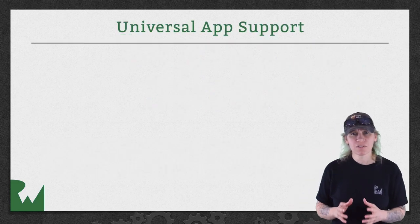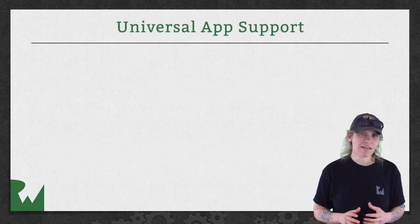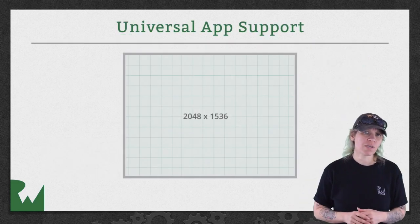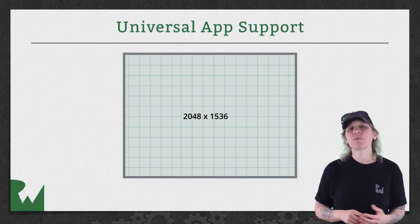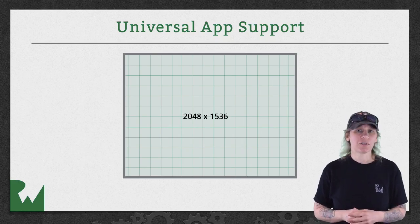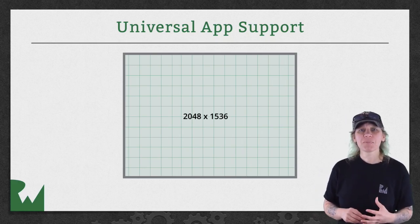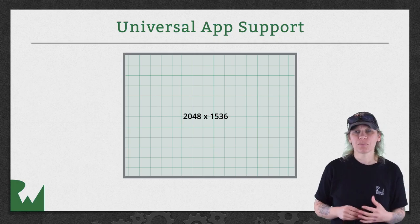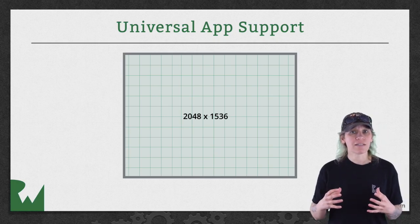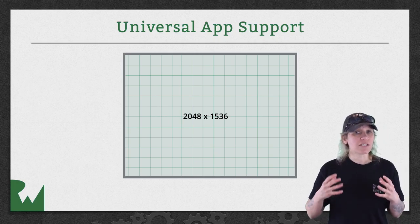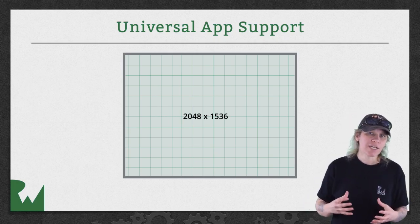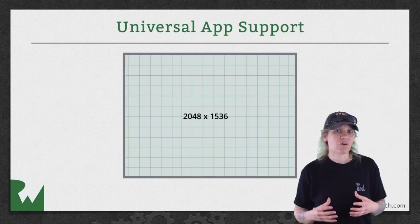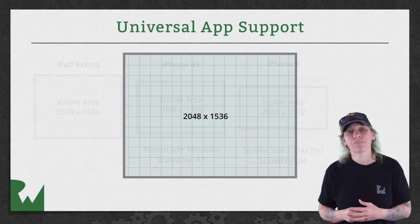Zombie Konga was designed with a base size of 2048 x 1536, with the scale mode set to Aspect Fill. Aspect Fill instructs Sprite Kit to scale the scene's content to fill the entire screen, even if Sprite Kit needs to cut off some of the content to do so.